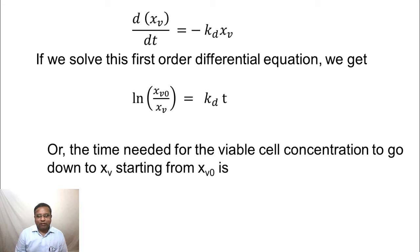The time needed for the viable cell concentration to go down to xv starting from xv0 is t equals 2.303 by kd log to the base 10 of xv0 by xv. As you can realize, this is natural log, log to the base e. When we convert that to log to the base 10, you have a factor of 2.303. But otherwise, this is essentially this equation transposed.